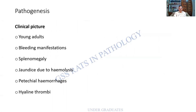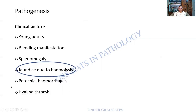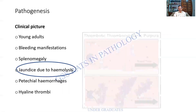The clinical manifestations include bleeding manifestations, splenomegaly, jaundice due to hemolysis, petechial hemorrhages, and hyaline thrombi. Of these, jaundice due to hemolysis is the most important clinical feature. It is seen in young adults presenting with this constellation of findings.